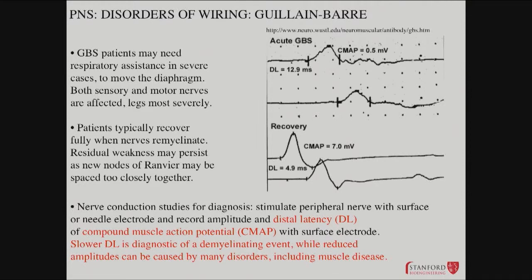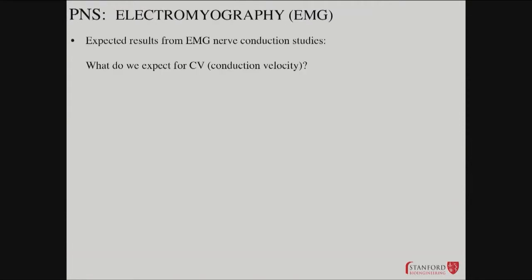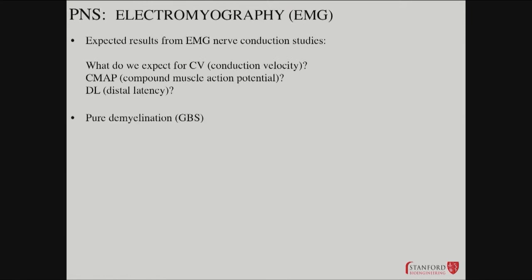The pattern for pure demyelination in Guillain-Barré is: increased distal latency, reduced compound muscle action potential, and decreased conduction velocity.